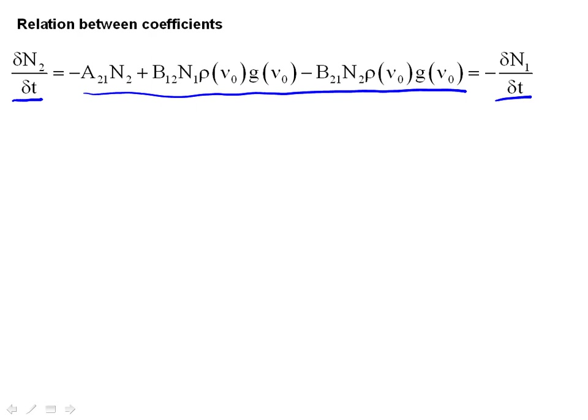And this differential equation, of course, depends on how many electrons we have in state 2 and state 1. It depends on the Einstein coefficients, the A and the 2B coefficients. It depends on the line shape of the transition at the frequency you've chosen, and it depends on the energy density.